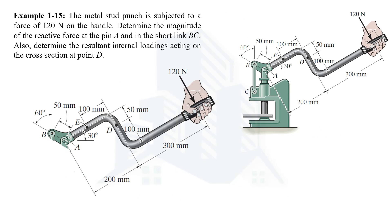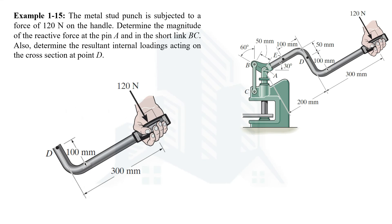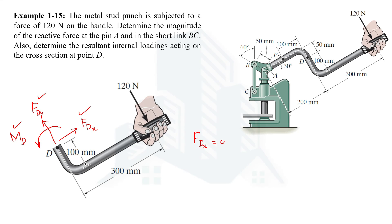Now let's move on to determine the resultant internal loadings acting on the cross section at point D, by considering this part of the metal stud punch. The resultant internal loadings at point D consist of: a vertical force FDY, a horizontal force FDX, and a moment MD. Since there is no horizontal force acting, FDX equals zero. The X-axis is horizontal and the Y-axis is vertical for this section.